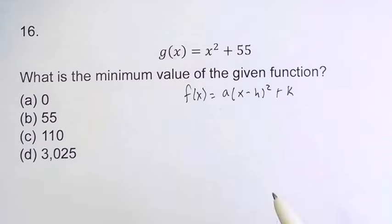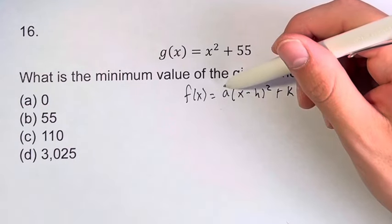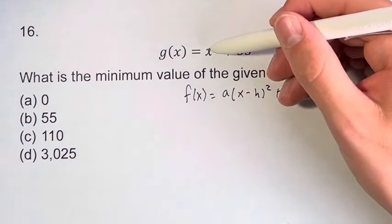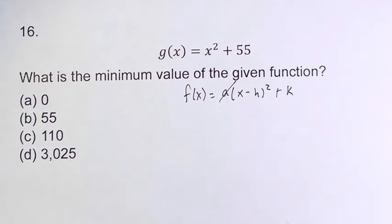Now here we have a little bit of a special case. So first of all, a is the coefficient of the x squared term, which in this case is just one. One times anything is just itself, so we can ignore that.